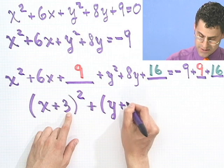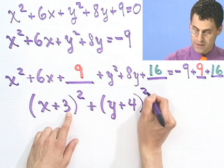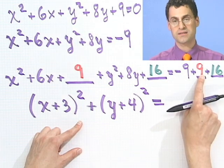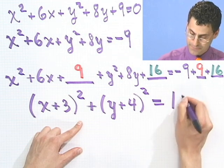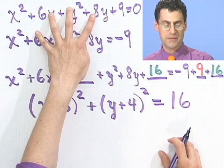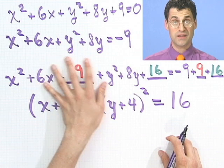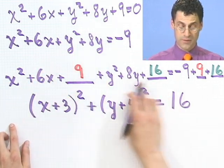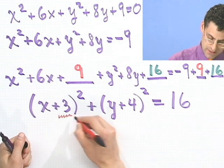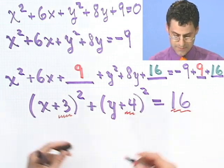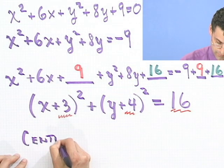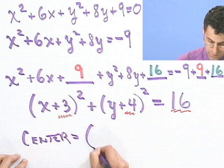So that checks. And similarly here, here we get y plus 4 quantity squared. And that equals what? Well, minus 9 plus 9 is 0, and then I have a 16. So this really complicated-looking algebraic expression can be massaged via completing the square twice into this form. Well, now it looks just like a circle form, and we can read it off, because it's now of this nice form where you can see these numbers.